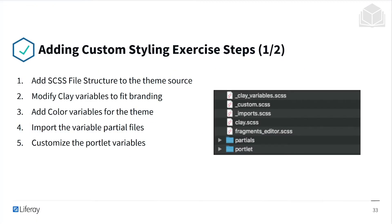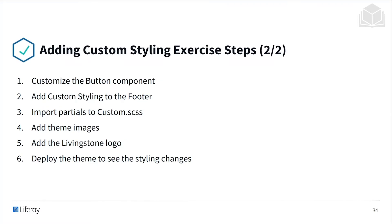Here are the steps we'll be taking in the exercise. First, we'll add the SCSS file structure to the theme source. We'll modify clay variables to fit branding, add color variables for the theme, import the variable partial files, and customize the portlet variables. We'll customize the button component, add custom styling to the footer, import the partials to the custom partial, add theme images and the Livingston logo, and finally deploy the theme to see the styling changes. After this exercise, there's a bonus exercise you can try for yourself — to add additional SCSS to improve the theme as you see fit.